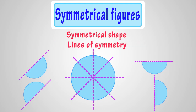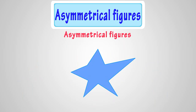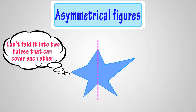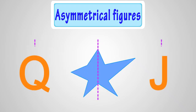Kids, now let's see some asymmetrical figures. This is an asymmetrical figure, as we can't fold it into two halves that can cover each other. Here are some more examples — these figures are asymmetrical. These numbers and characters are perfect examples of asymmetrical figures.